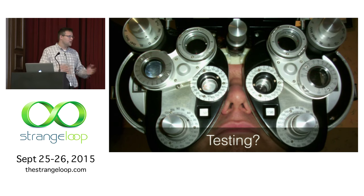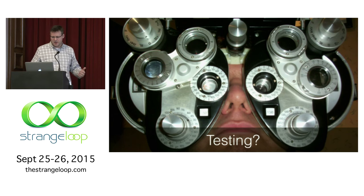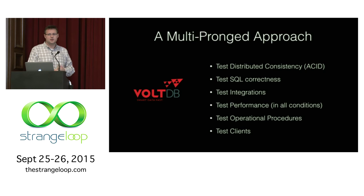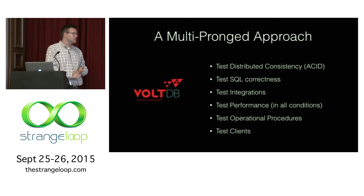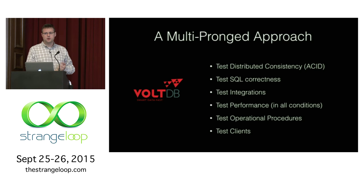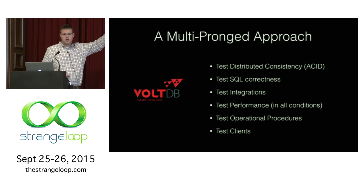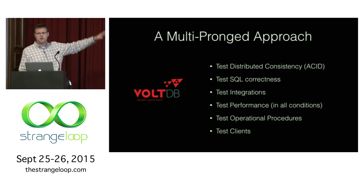Moving on to the second half of the talk: how do we leverage all this determinism to test? Testing any distributed system like VoltDB means we've got to test ACID guarantees, SQL correctness, integrations with things like Kafka and Hadoop, performance, and operational procedures like restart and upgrade. We're going to focus on the ACID testing and one particular way we do that.